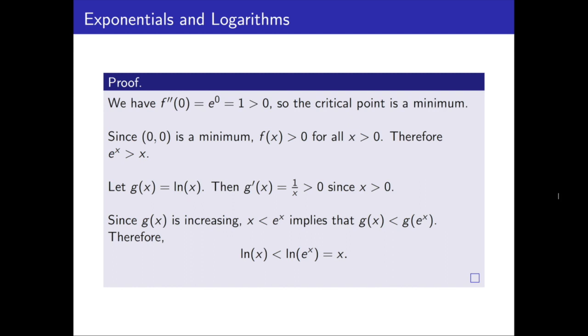then g of x must be less than g of e to the power x. That's how an increasing function works. And in this case, g is the natural log, so we can take the natural logarithm of both sides of this inequality. We get that the natural log of x is less than the natural log of e to the power x, which is of course equal to x, as these functions are inverses.